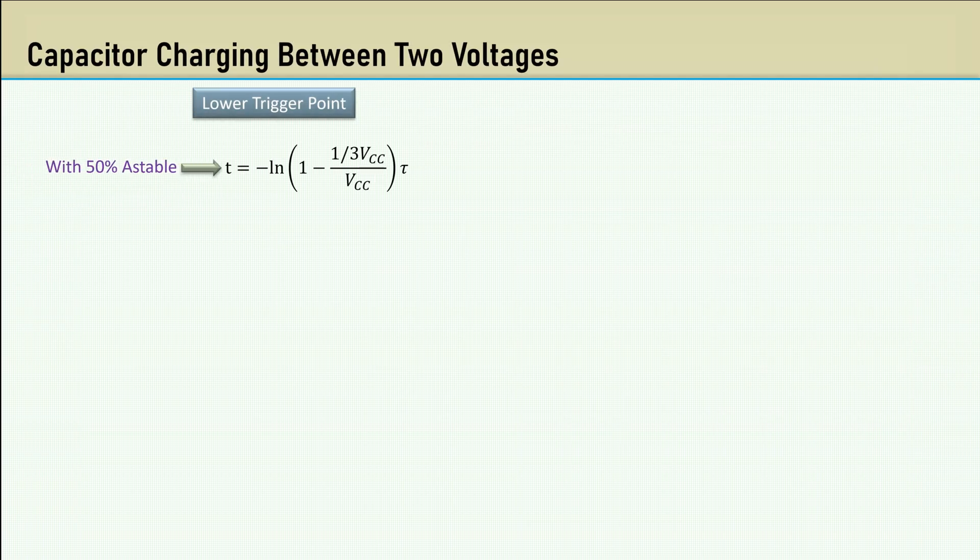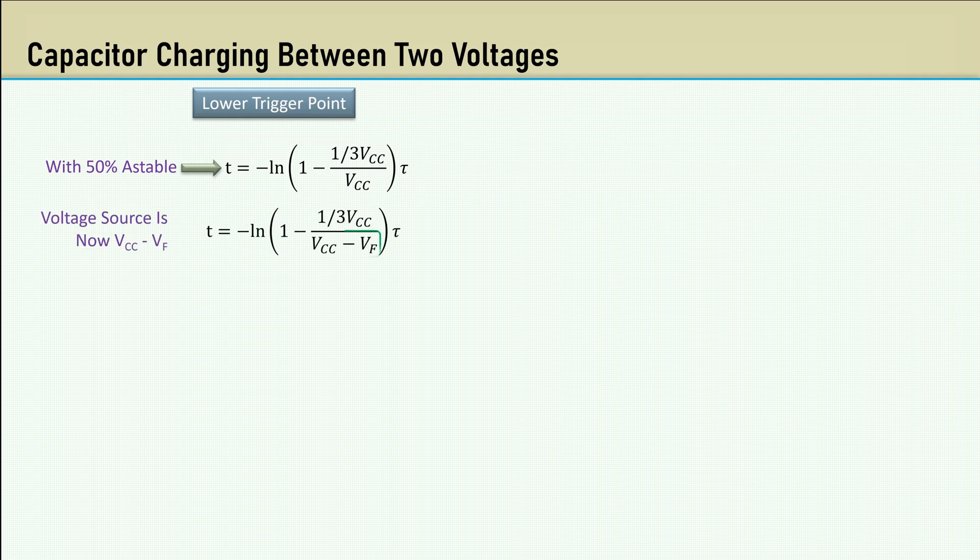In the case of the astable with 50% duty, the charging voltage supply was VCC and the lower threshold voltage was one-third VCC. In this case, the threshold voltage is still one-third VCC, but the capacitor is charged and discharged through a diode, so the voltage source is now VCC minus VF, the forward voltage drop of the diode.